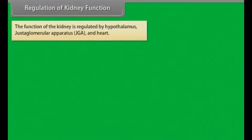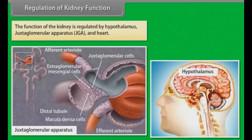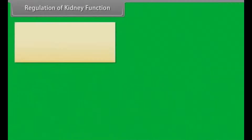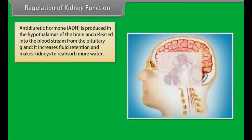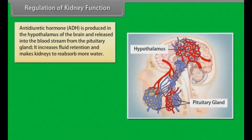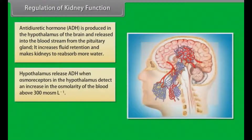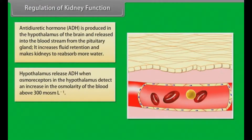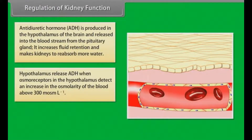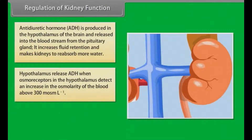Regulation of kidney function. The function of the kidney is regulated by the hypothalamus, juxtaglomerular apparatus and heart. Antidiuretic hormone (ADH) is produced in the hypothalamus and released into the bloodstream from the pituitary gland. It increases fluid retention and causes the kidneys to reabsorb more water. The hypothalamus releases ADH when osmoreceptors detect an increase in blood osmolarity above 300 milliosmoles per litre.